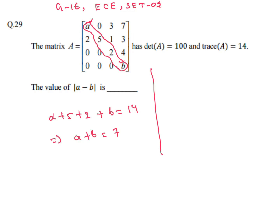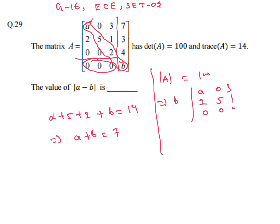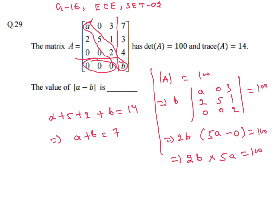For the determinant: expanding along the row with most zeros, the determinant equals 100. This gives 2b into 5a equal to 100, which simplifies to a·b = 10. So we have equation 1: a + b = 7, and equation 2: a·b = 10.